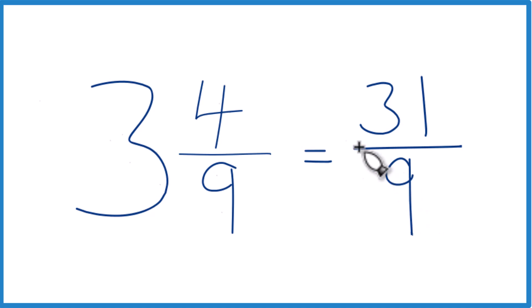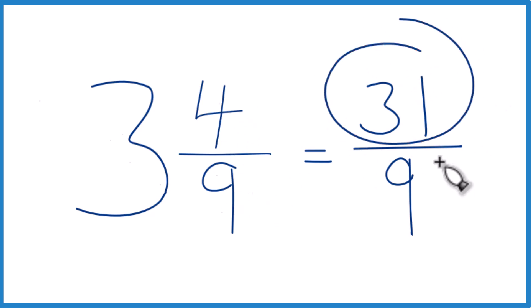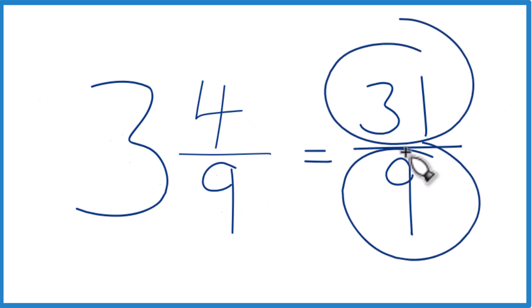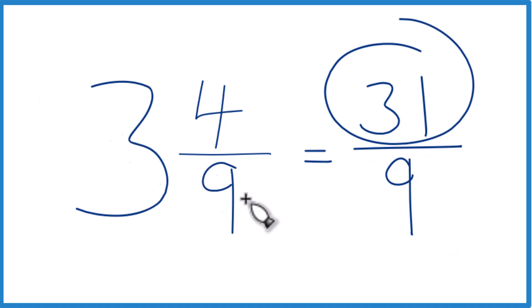Let's do that again. 3 times 9, that's 27. 27 plus 4 is 31, and we just brought the 9 across. And 31 ninths — that is the improper fraction for 3 and 4 ninths.